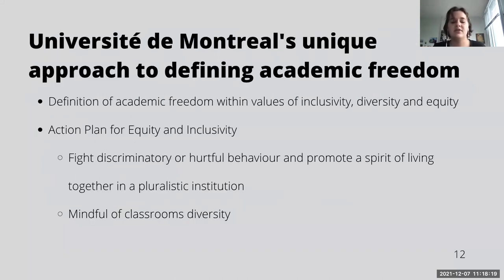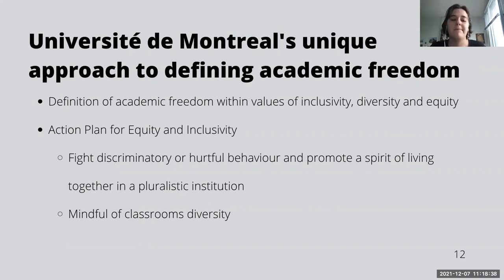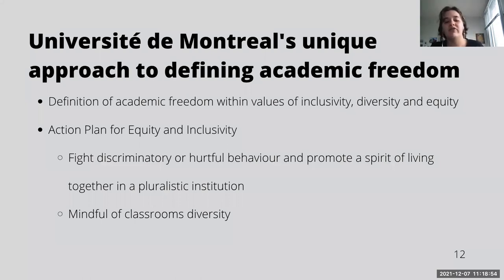There was an interesting and unique case with Université de Montréal, who defined academic freedom as freedom that exists within values of inclusivity, diversity, and equity at a pluralistic university determined to fight discriminatory or hurtful behaviour on its campus and in classrooms. It is the only university that made a point to do this — it is quite progressive and uses an intersectional lens to define academic freedom. However, as it is part of a practical guide meant to be implemented through 2023, we are still waiting to see how these values will be implemented in practice and in the classroom.